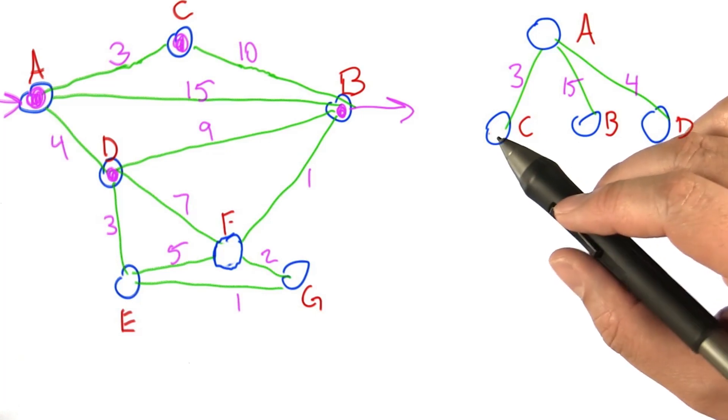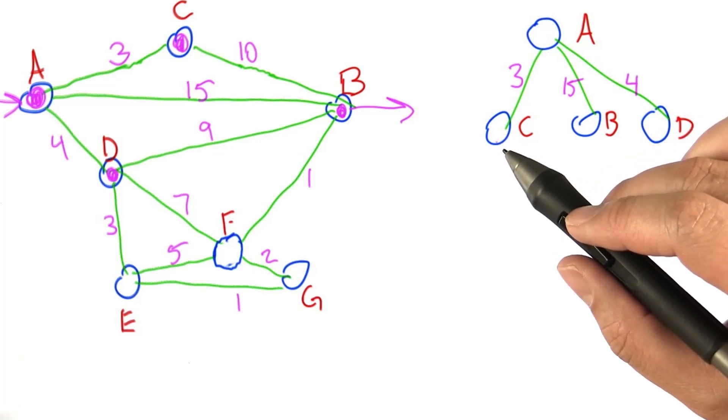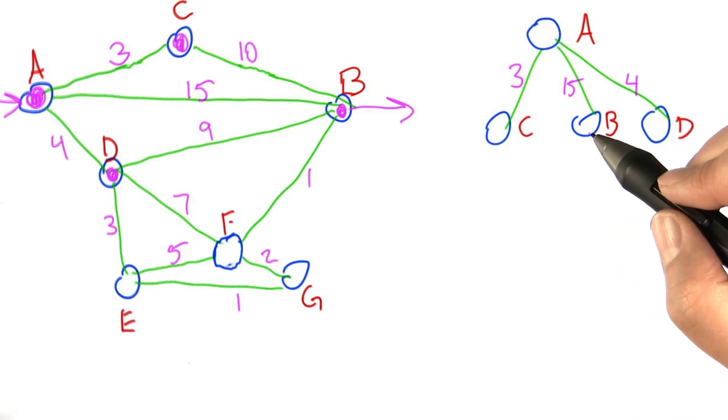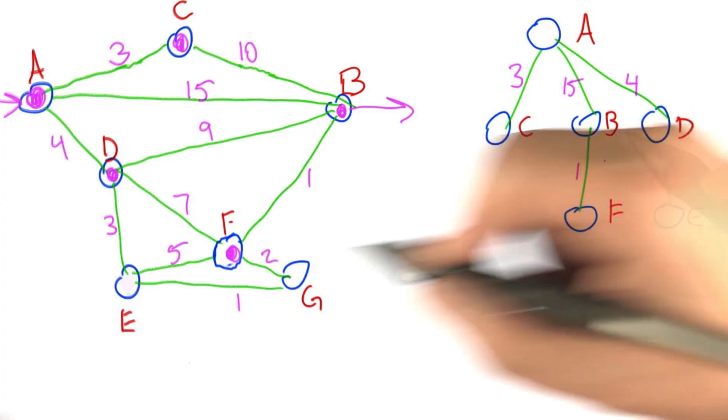and D. Then we choose one of these nodes, say C, and add all its unexpanded neighbors to the graph, but all its neighbors are expanded. Do the same thing with B. B has F, and D's unexpanded neighbors are E.